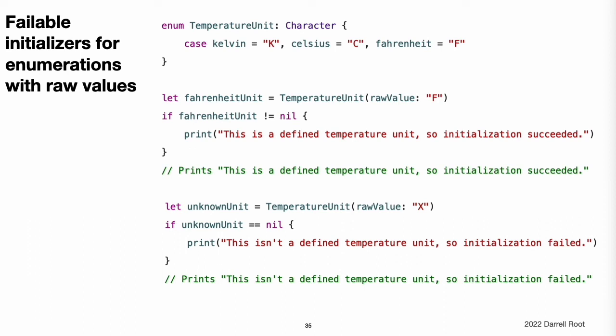Failable initializers for enumerations with raw values. Enumerations with raw values automatically receive a failable initializer, init(rawValue:), that takes a parameter called rawValue of the appropriate raw value type and selects a matching enumeration case if one is found, or triggers an initialization failure if no matching value exists. You can rewrite the TemperatureUnit example from earlier to use raw values of type Character and to take advantage of the init(rawValue:) initializer.